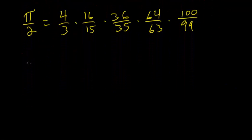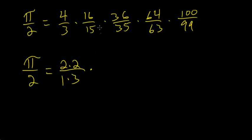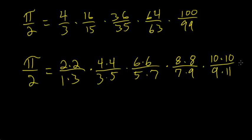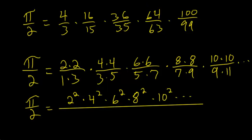Writing this in its final form: π/2 = (2·2)/(1·3) · (4·4)/(3·5) · (6·6)/(5·7) · (8·8)/(7·9) · (10·10)/(9·11) · … This is the Wallis product: π/2 equals the product of all squares of even numbers divided by the product of all squares of odd numbers.